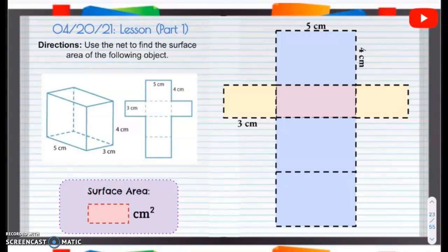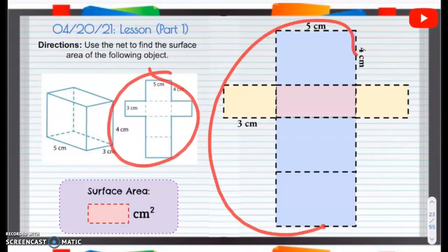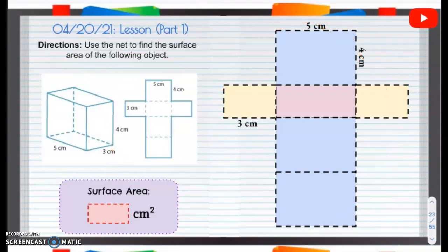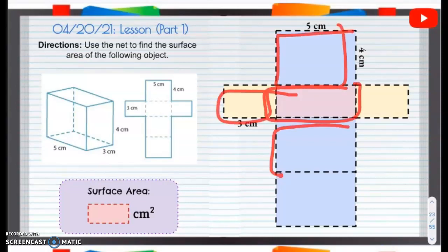All right, we're going to do all three parts of the lesson in one video. So the first one, we're going to use this net, or actually this bigger net, to help us find the surface area of the following object. So just like when you're wrapping a present, or you have the surface of something, it's the outside. So we're going to find the area of all of these, and then we will add them together.